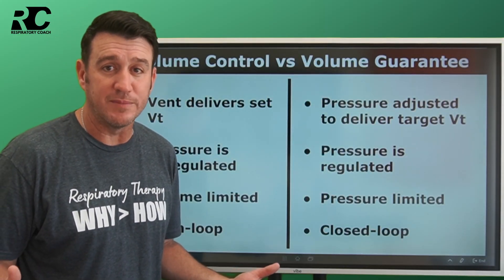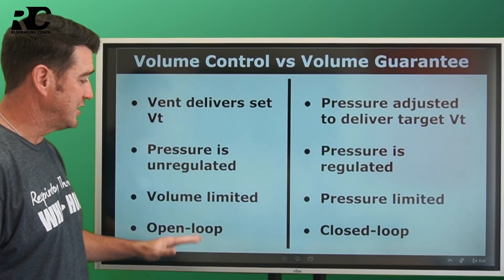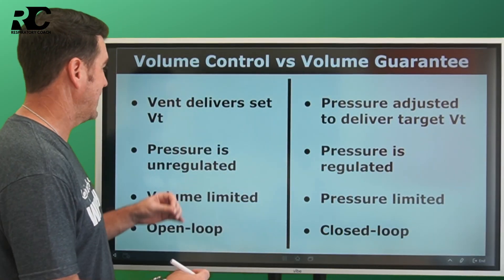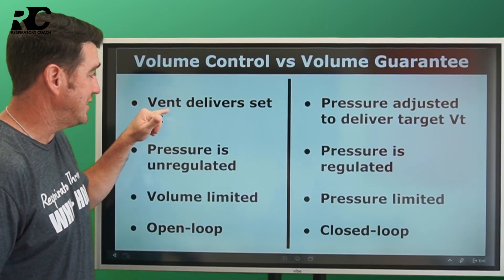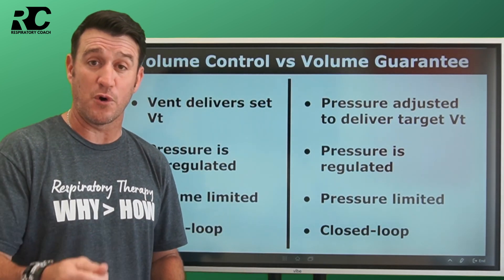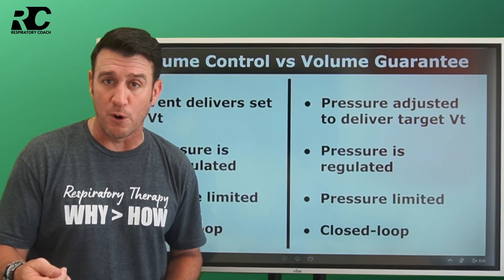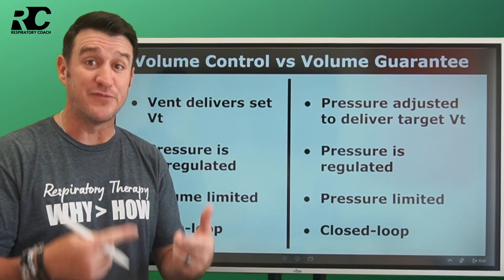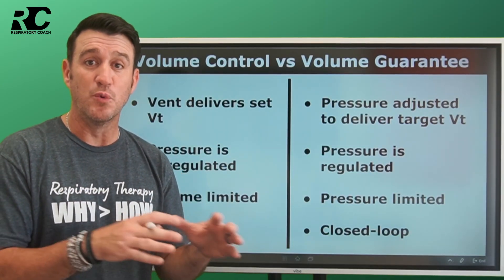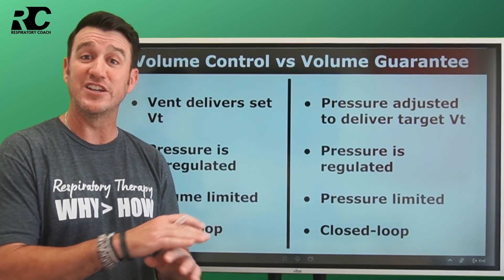Volume control versus volume guarantee — the screen is broken up into two sides. On the left side we see volume control features, and we're going to compare those to volume guarantee features. In volume control, the vent delivers the set tidal volume. You set a tidal volume — 450 milliliters, 400, 490, 500 — however many milliliters are appropriate for your patient — and the ventilator delivers that volume breath after breath. Any mandatory breaths will deliver that set tidal volume regardless of anything else.